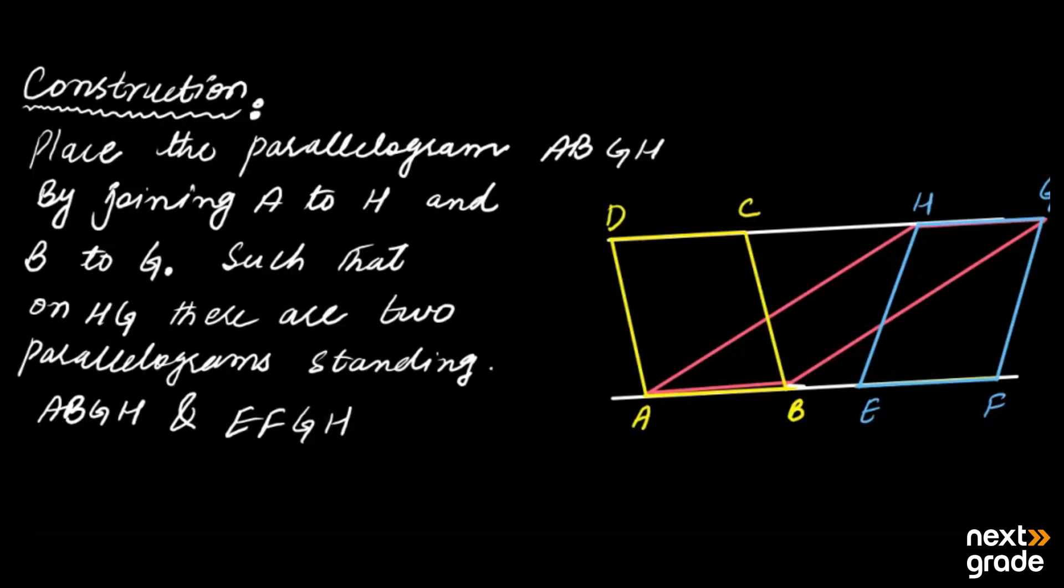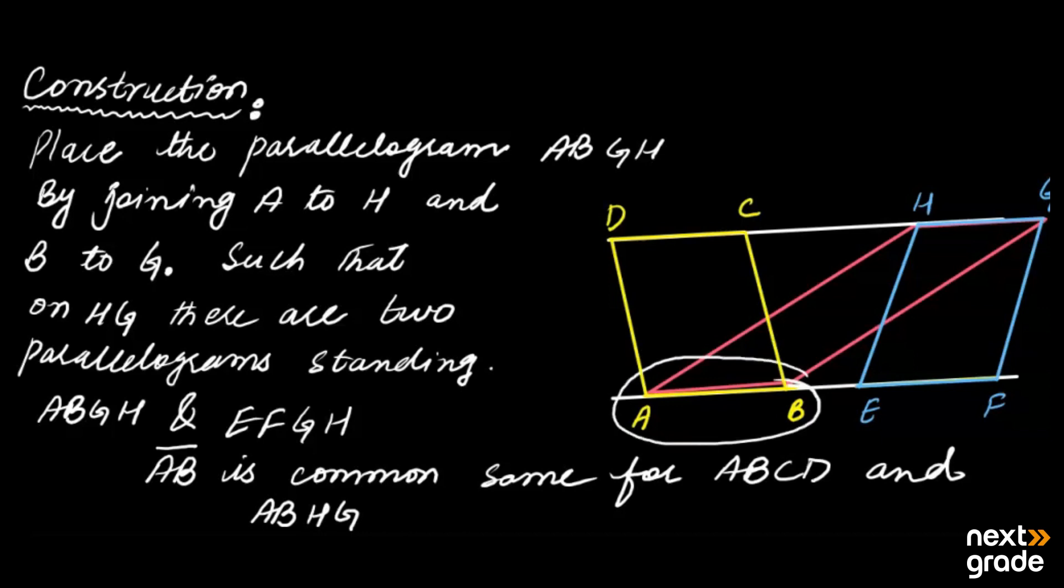Now if you look at AB, then AB is common base or same base for ABCD and the other shape is ABGH. Okay, now you can see that on AB also two triangles are made, one yellow and one pink. And if we look at HG, then two triangles are made, one pink and one blue. So basically we have considered common base for two triangles. This is why we have considered.